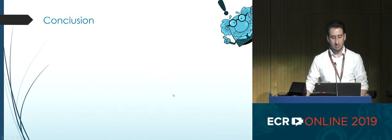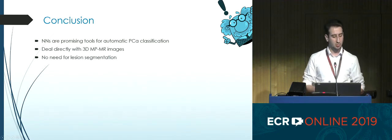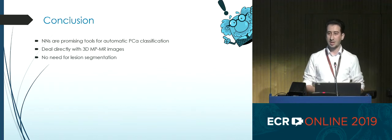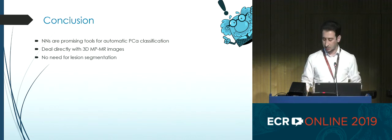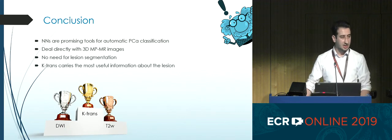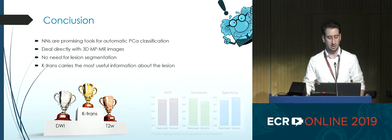To conclude, neural networks are promising tools for automatic prostate cancer classification. They can deal directly with 3D images without slice selection or lesion segmentation. We can also conclude that K-trans carries the most useful information about the lesion and the characteristics of the tumor — whether it's cancer or no cancer.